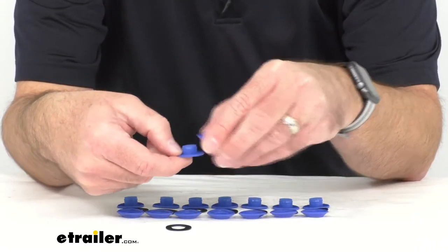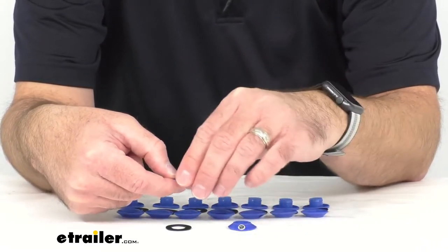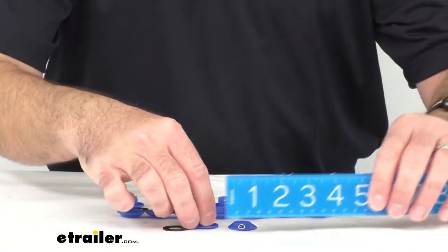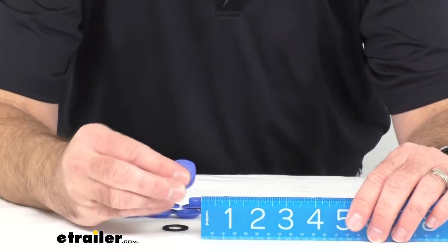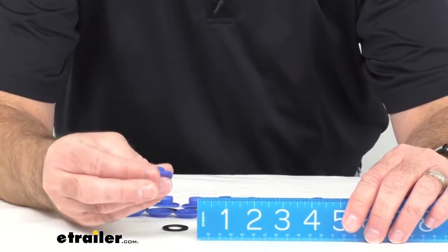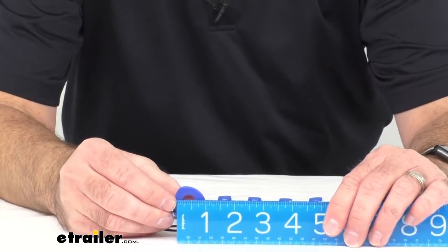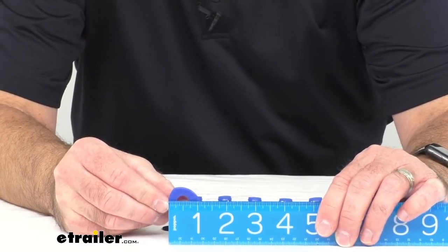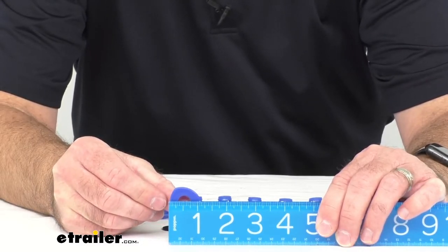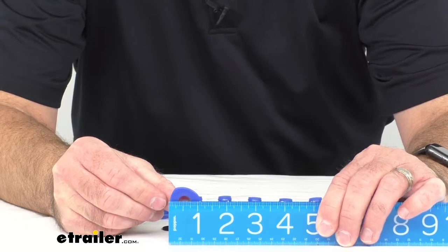This set will include eight grommets and let me give you some measurements here while we're looking at these. So I'm going to start with the male portion of the grommet and the overall width and it's going to be the same for the most part for the female end as well. But the overall width is going to be about an inch and an eighth across.